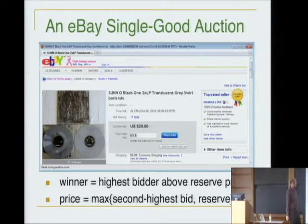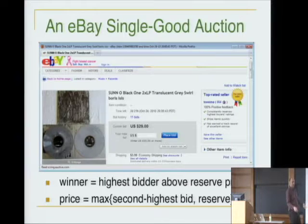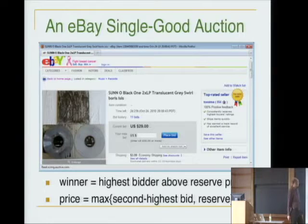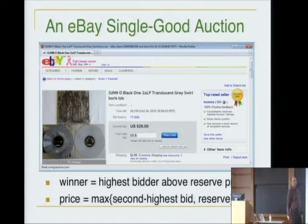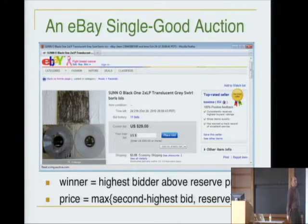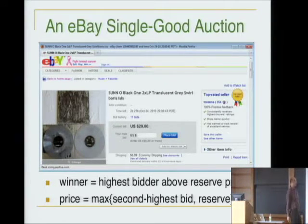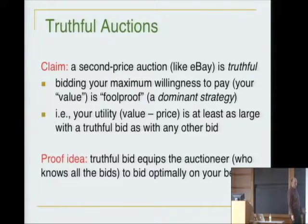At the end of the auction the winner is whoever typed the highest number — the highest bidder. The price — if you haven't seen this before — is what's called a second-price or Vickrey auction. If I win, I don't pay my bid of say 50 dollars; I pay the second-highest bid. So if the most anyone else bid was 30 dollars, I pay 31 dollars — the second-highest bid plus an increment.